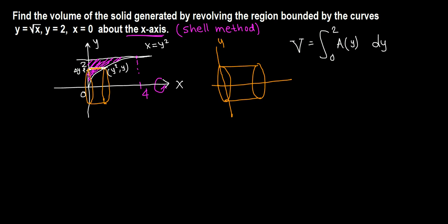Now we want to find the surface area of the cylinder, which is A(y). The surface area is given by the formula 2πrh. So 2π times radius times height.